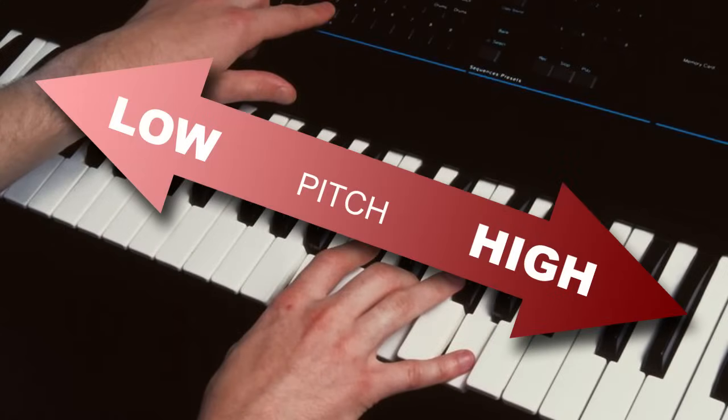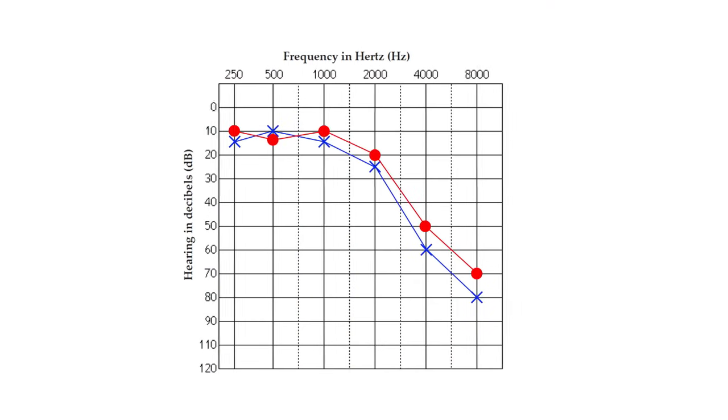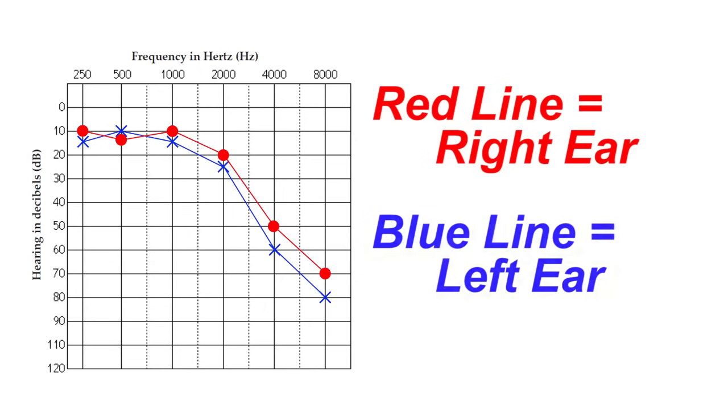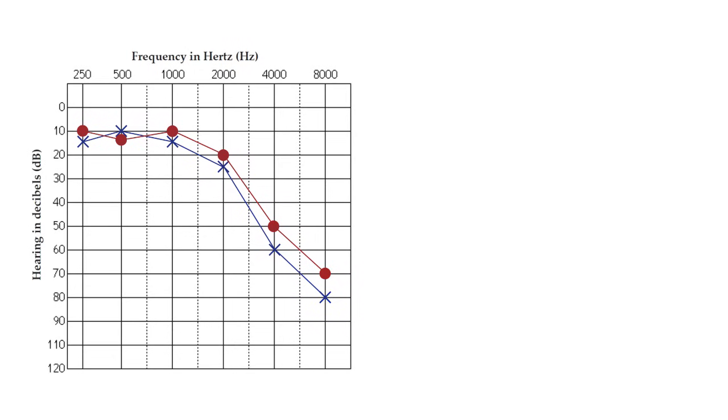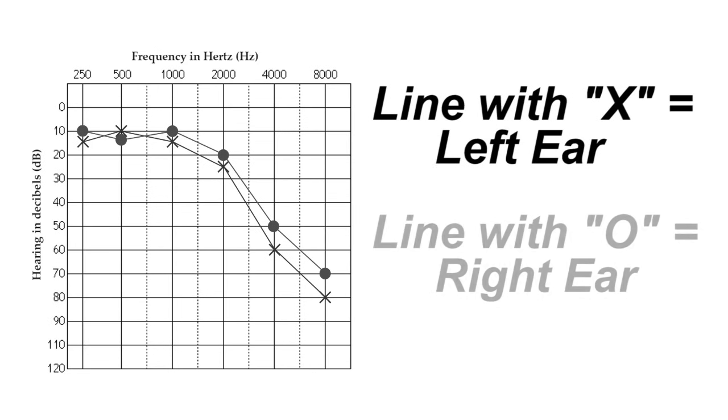On a typical audiogram you will also see two lines, one red and one blue. The red line represents the hearing in your right ear and the blue line represents your left ear. If your audiogram does not have colors, then the line with the X's represents your left ear and the line with the circles represents your right ear.